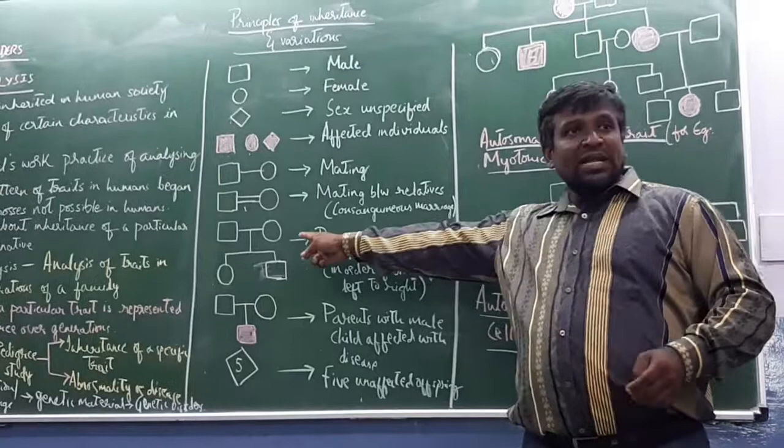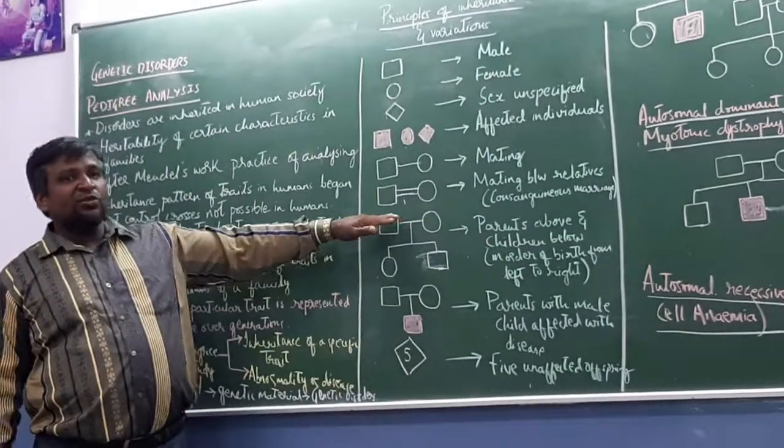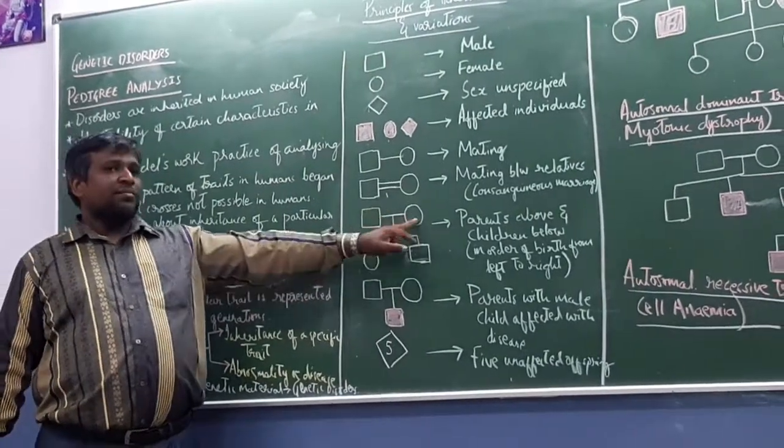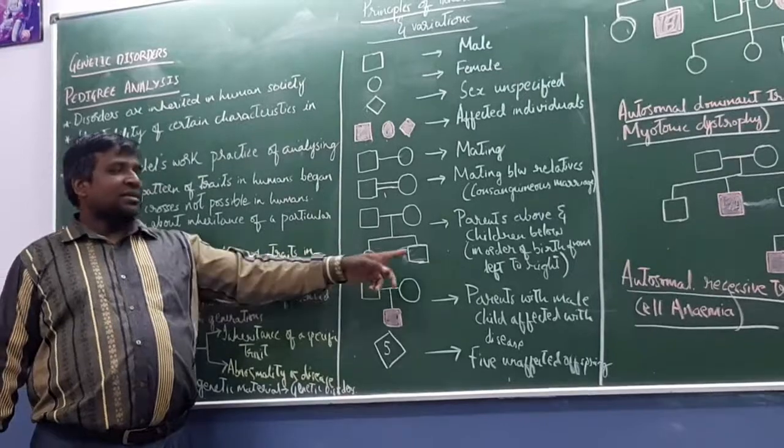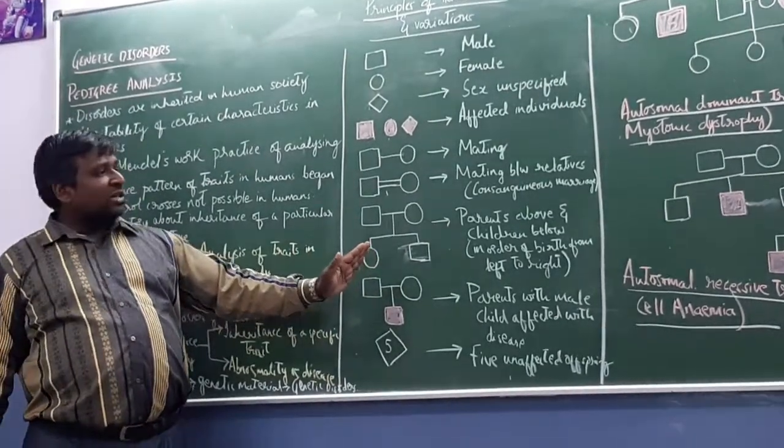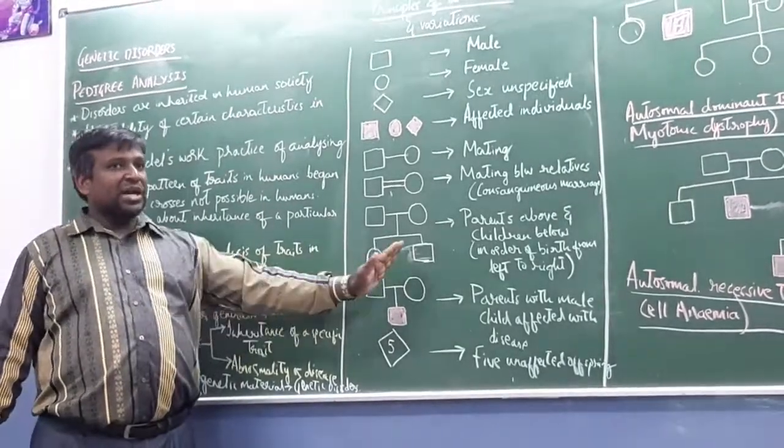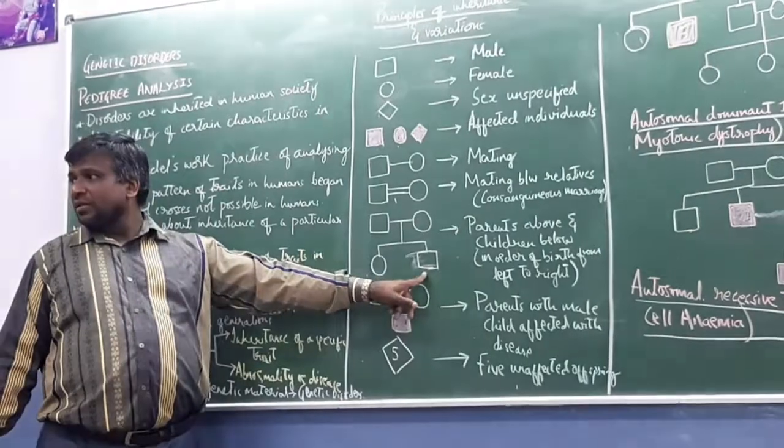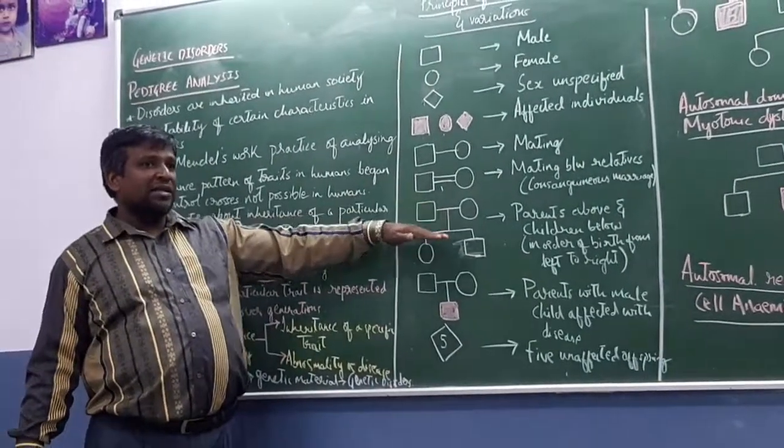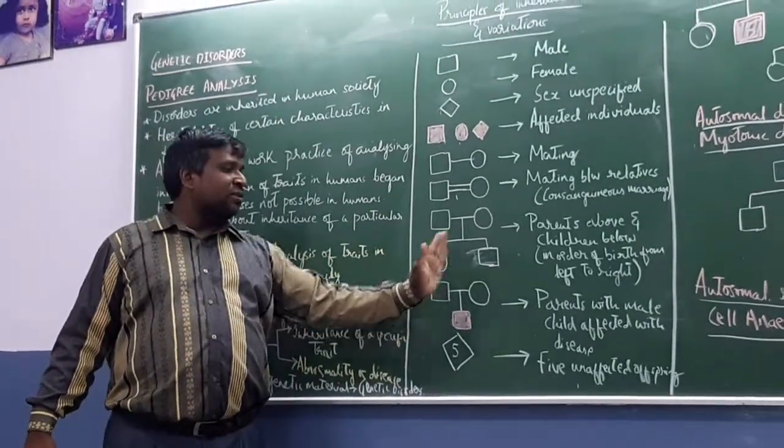What does this symbol indicate? Parents who have given birth to offspring. Father, mother, daughter, son. From left to right, it is based on the sequence of birth. First child is daughter, left to right. Second child is son.